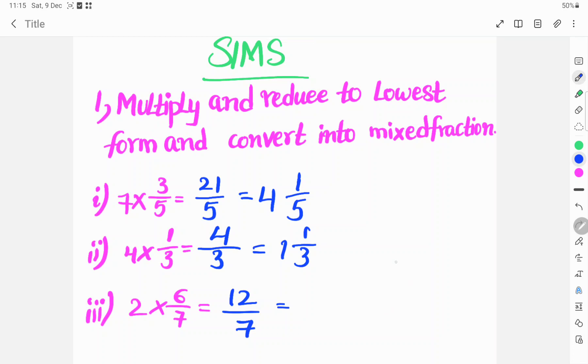Convert into mixed fraction. 7 into 12. 7 times 1 is 7. 12 minus 7 is equal to 5. So 1 and 5 by 7.